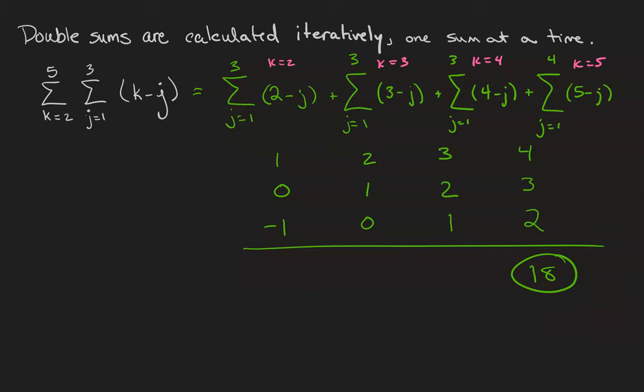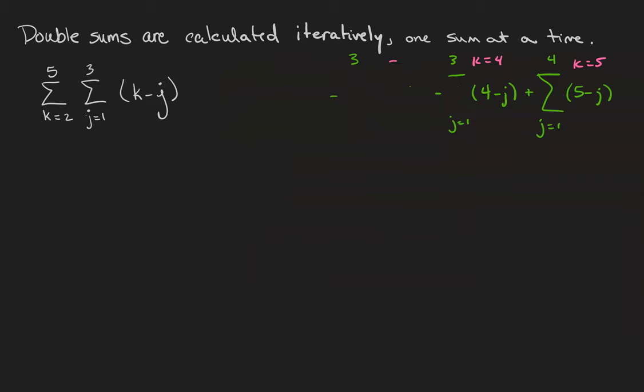Now I'm going to erase this and I'm going to do it the other way where I iterate over the j's first and then do the k's. Remember that my sum should be 18. Alright, this time we're going to iterate the j's first.